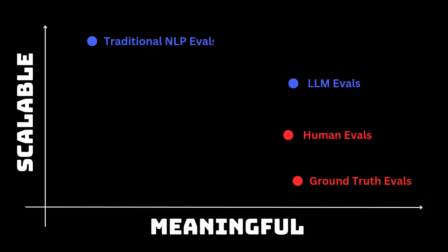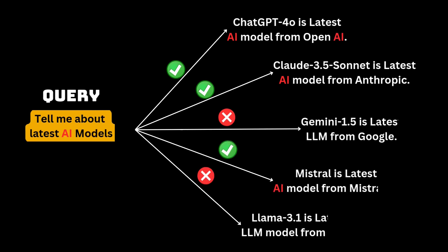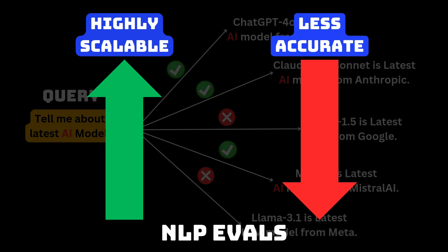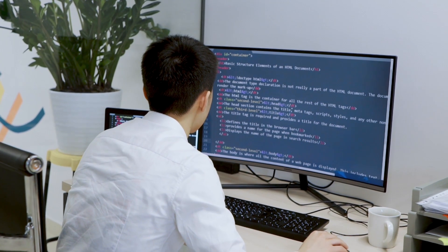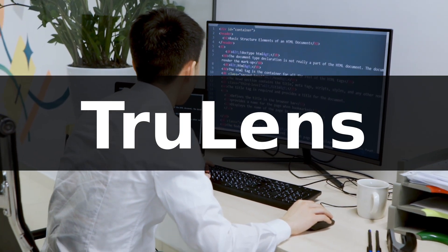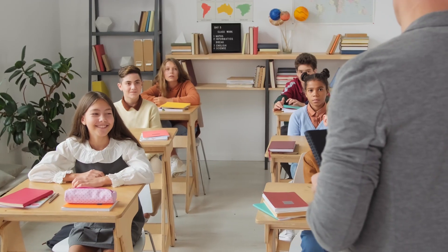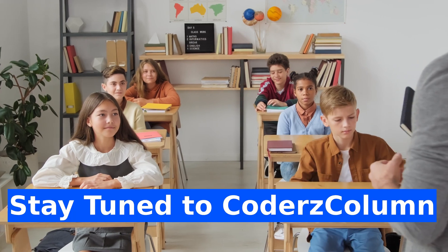One more option is to use traditional NLP evals like ROUGE score, BLEU score, etc., which look for overlapping words between text. Traditional NLP evals are highly scalable but are generally less reliable, as word overlapping is not an ideal way to meaningfully compare text. You can implement these evaluations yourself or use the TruLens framework, which has all these evaluations implemented.